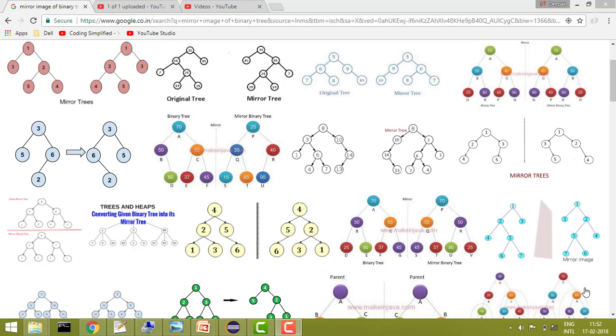Hey guys, welcome to Coding Simplified. Today our aim is to convert a binary tree into a mirror tree. So basically what does that mean? Let's take an example of this one.